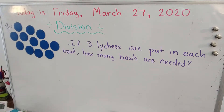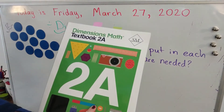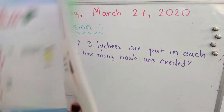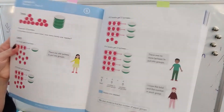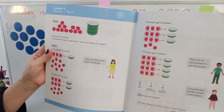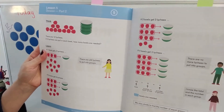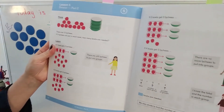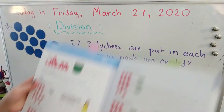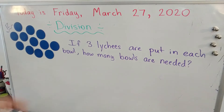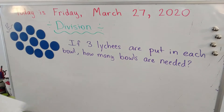So the first problem — if you open your textbook to lesson 5, it looks like this. We're going to go ahead and start reading. It says there are 12 leeches. Here are my leeches. If three leeches are put in each bowl, how many bowls are needed?